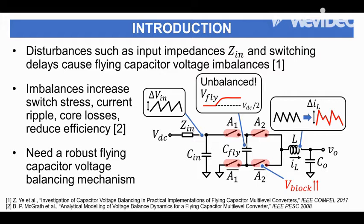But one of the primary challenges of designing them is capacitor voltage imbalancing, which can occur due to disturbances such as input impedances. This can increase the ripple and increase the switch stress, which are the primary advantages that we want to obtain from designing these converters.